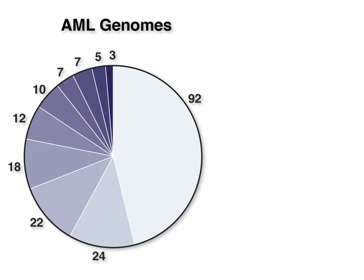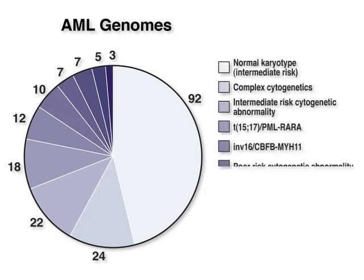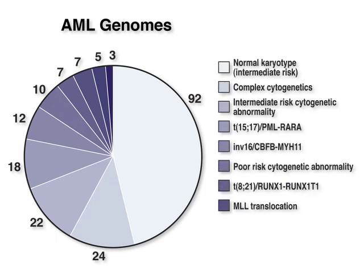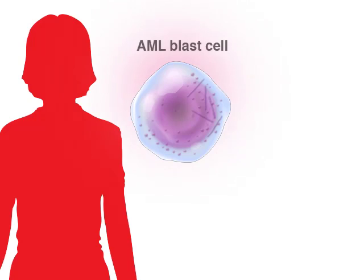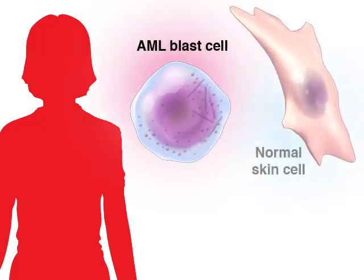200 samples that had been banked at Washington University in St. Louis were selected for analysis, representing all the well-described morphologic and cytogenetic subtypes of the disease in real-world proportions. DNA sequence changes that occurred in tumor cells were identified by comparing the sequence of each AML sample with the sequence of a sample of normal skin cells from the same patient.